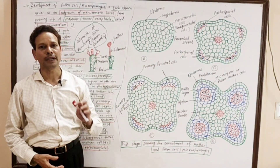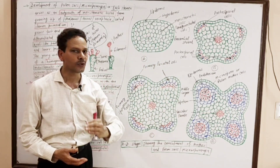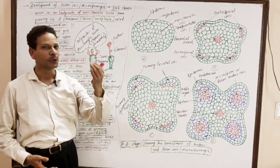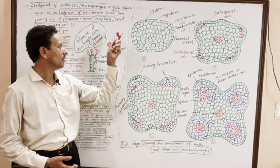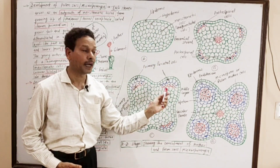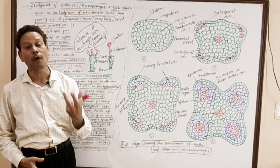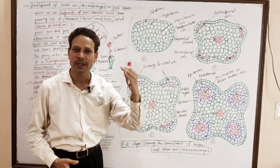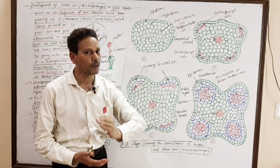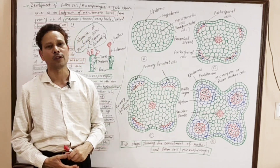These notes have been uploaded in the description of the video. Please download your notes. Dear students, in this chapter of Sexual Reproduction in Angiosperms, today I will discuss development of stamen, development of anther, and in that anther, development of microsporangia and pollen sacs. In this lecture, I will clear development of stamen, development of anther, and development of pollen sacs or microsporangia.